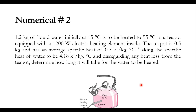In the second numerical, 1.2 kg of liquid water initially at 15 degree centigrade is to be heated to 95 degree centigrade in a teapot equipped with a 1200 watt electric heating element inside. The teapot weighs 0.5 kg and has an average specific heat of 0.7 kJ per kg degree centigrade. Taking the specific heat of water as 4.18 kJ per kg degree centigrade and disregarding any heat loss from the teapot, we must determine how long it will take to heat the water.